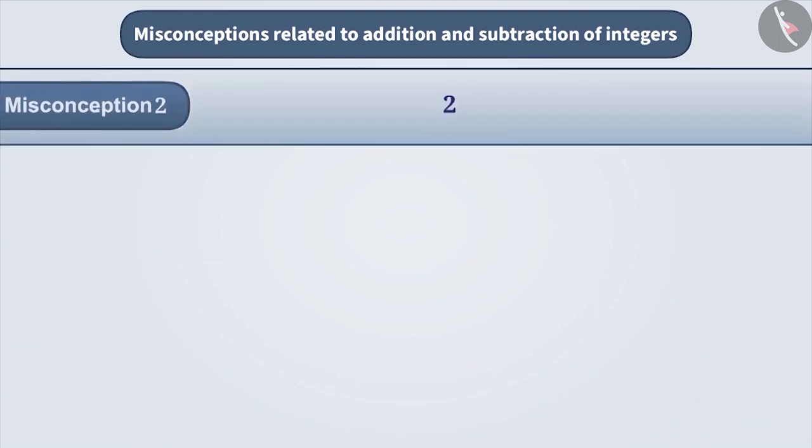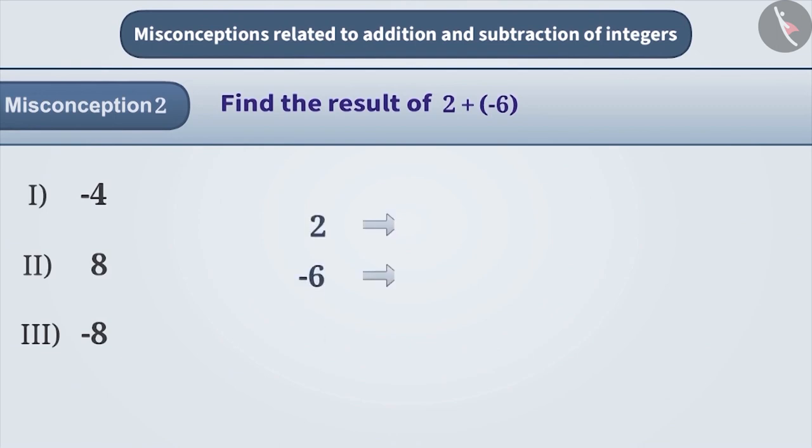Misconception 2: Find the result of 2 plus minus 6. When 2 integers have different signs, in order to add them, we have to consider the value of both the numbers without sign. This is called a numeral value. After the smaller number is subtracted from the larger number.